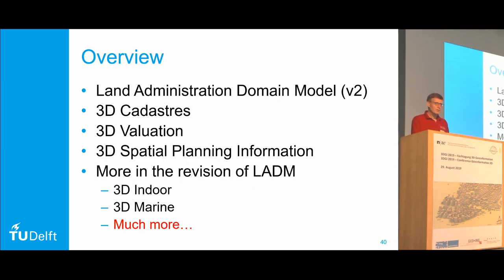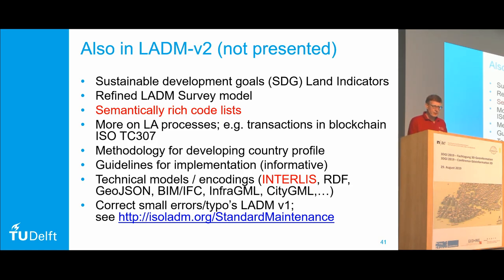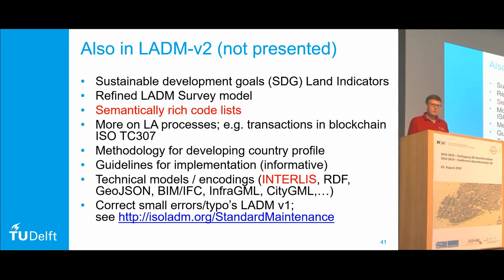For the last few minutes, there are additional topics to be included, though everything I say now is not yet confirmed — we have to go through the four-year ISO process to find consensus and develop the new standard. Very important are the United Nations Sustainable Development Goals to derive land indicators and see how the world is progressing. We also want a refined survey model with more detail. We have code lists with important values about the type of rights — ownership, lease — and we want to make them semantically rich. LADM version 1 is about information only; in LADM version 2 we also try to address processes — for example, recording transactions using best-practice processes with blockchain technology.